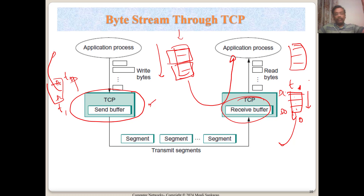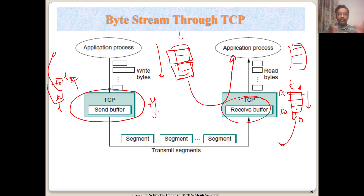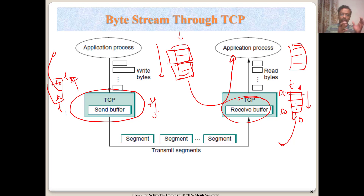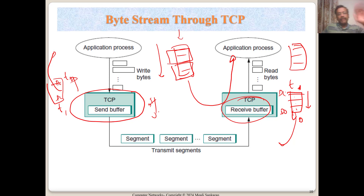TCP delivers data to the application process as soon as a complete window is received, not waiting for the entire transmission. It's like sending pages of a book — you don't wait for all 1000 pages; you wait for maybe 100 pages to arrive in order, deliver them, then wait for pages 100 to 200, and so on.